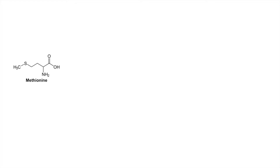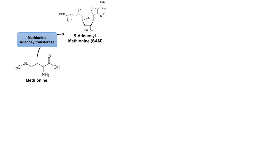We begin with methionine, which can come from a dietary source like protein — remember that it is an essential amino acid. Methionine is special in that it is one of only a few amino acids that contains sulfur in its structure. To start metabolizing methionine, we need an enzyme known as methionine adenosyl transferase, which transfers an adenosine group onto methionine. That adenosine group comes from ATP, or adenosine triphosphate.